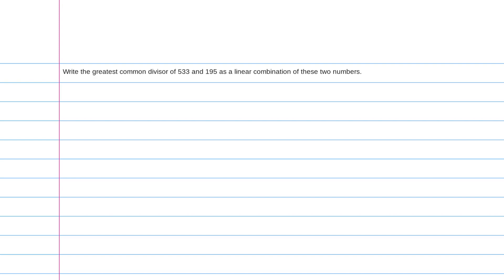In this example, we want to, number one, find the greatest common divisor of 533 and 195, and then write this number as a linear combination of these two original numbers. So step one is to actually compute the GCD of 533 and 195, and to do this, we'll use the Euclidean algorithm.